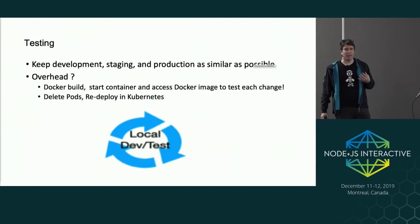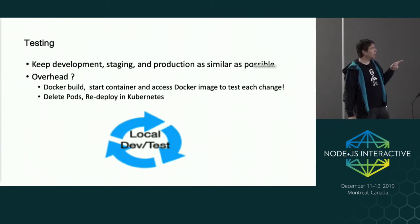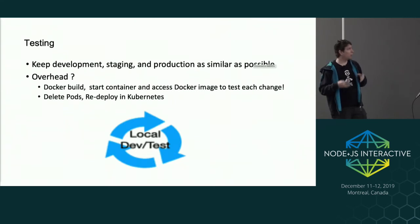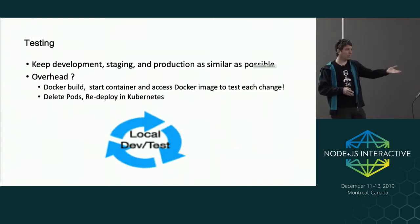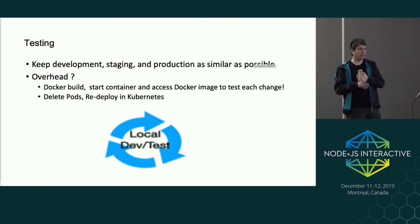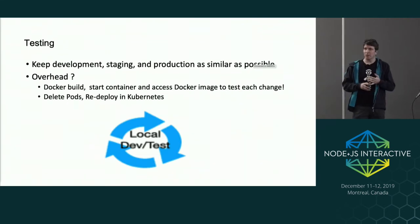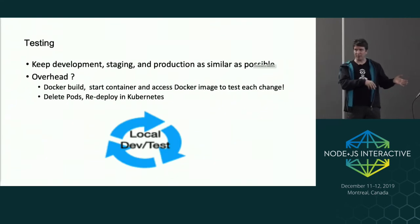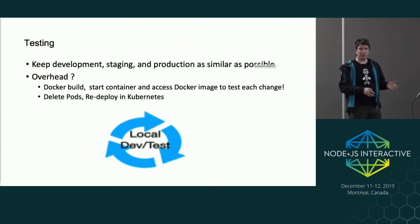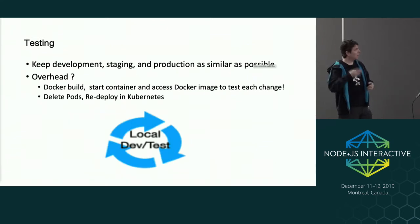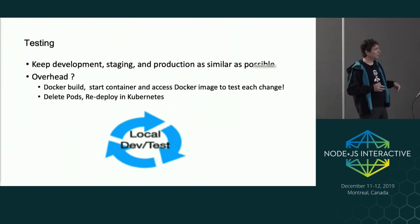Stepping back to think about testing: based on the 12-factor approach, we want to keep development, staging, and production as close as possible. If we're developing on macOS or Windows but deploying on Docker (basically Linux), we should test in Docker or Kubernetes ideally. But there's overhead — rebuilding the Docker image, starting it, running tests — on every cycle. We'll come back to that later.